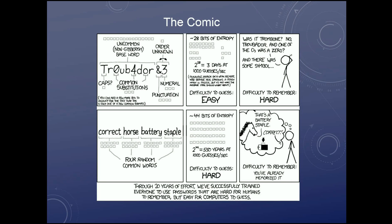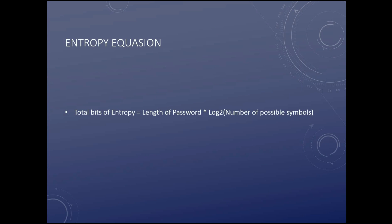Let's take a look at the formula. This is how they figure out the total bits of entropy in a password: it is the length of the password — whether it's eight, nine, ten, or eleven characters — multiplied by log base 2 of the number of possible symbols you have to use. I'll get into what 'number of possible symbols' means in just a second.